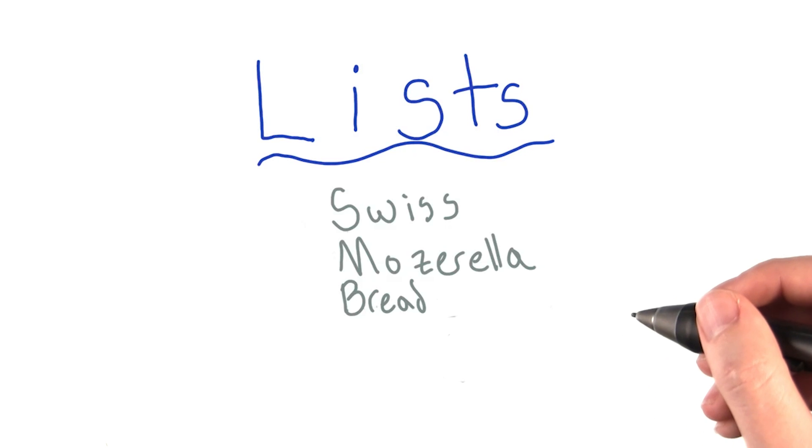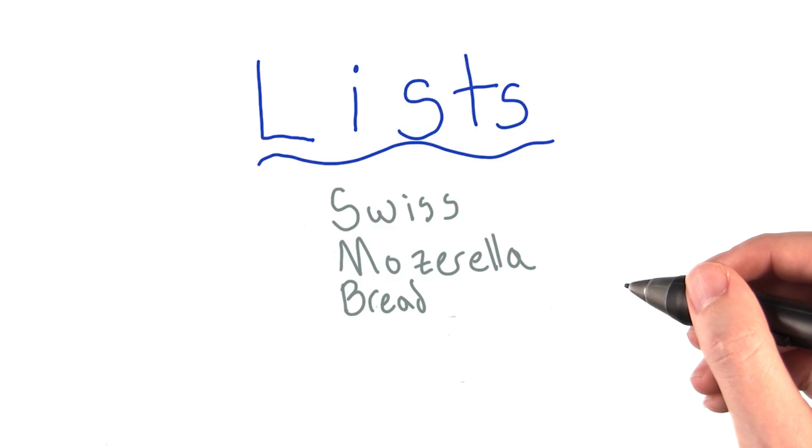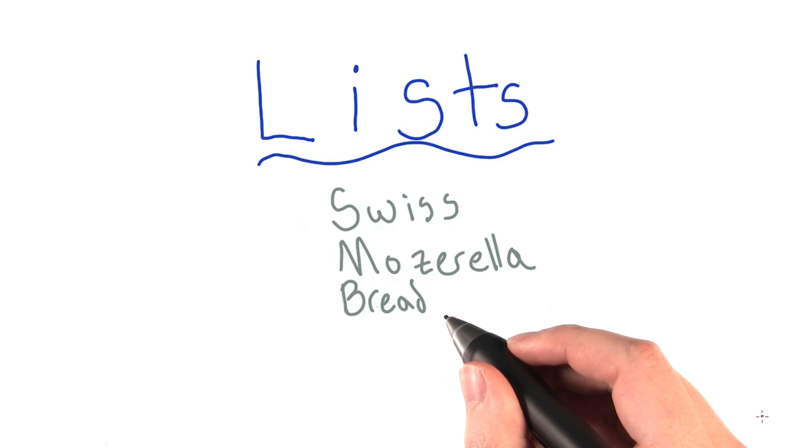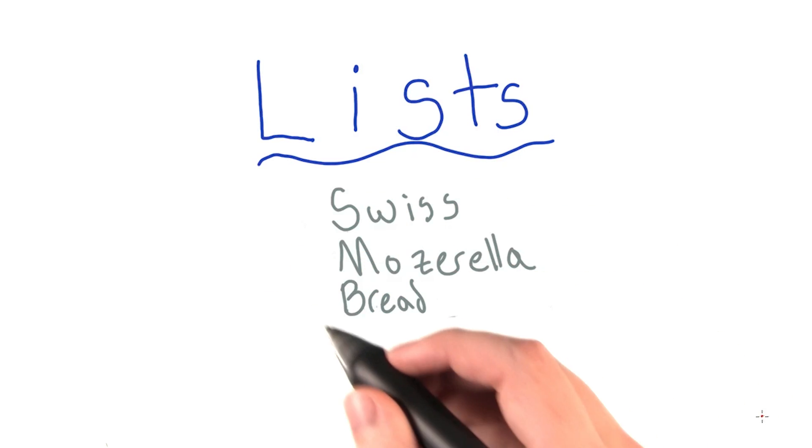A shopping list, while not really something programmers deal with a lot, happens to have a lot of the same properties as the list we use. There are things that might not have the same type of object, but they're still related to everything else on the list.